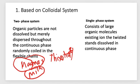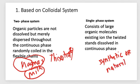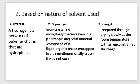For the single-phase system, they consist of large organic molecules existing as twisted strands dissolved in a continuous phase. The macromolecules are distributed so that no apparent boundaries exist between them and the liquid. Single-phase gels are usually made from synthetic or natural macromolecules. Natural source macromolecules are called mucilages.